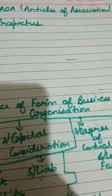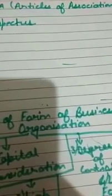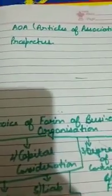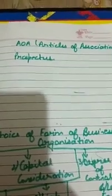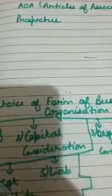Articles of Association contains the rules and regulations. MOA contains the powers and objectives, but AOA contains the rules and regulations regarding the management of the company and its internal affairs. It defines the duties and rights of the managers, officers, and board of directors. Almost all companies prepare the Articles of Association, and it becomes binding on the managers as well as the members, as all rights, responsibilities, rules and regulations are mentioned in it.